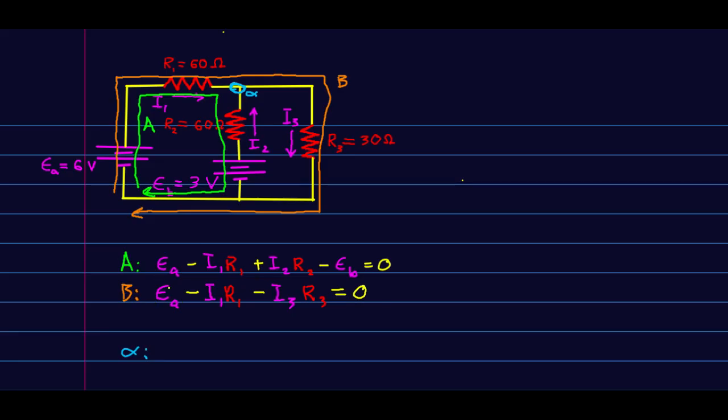So now we've got both of our loop laws. Let's just write a junction law for junction alpha. We're saying that the currents in add up to the currents out. i1 and i2 are both in, and that equals the current out, which is i3. And we now have three equations in three unknowns, which means we can solve.